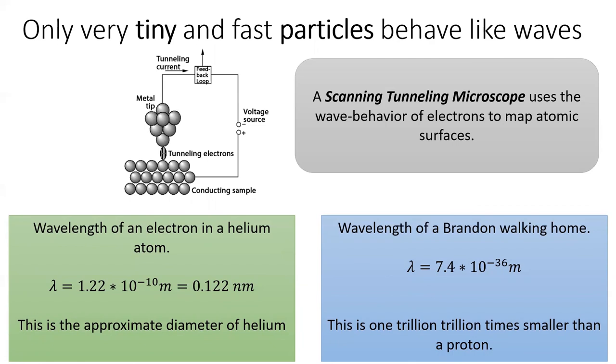The takeaway message here is that only very tiny and very fast particles have any detectable wave-like properties. This is exploited in many physics experiments, such as using a scanning tunneling microscope or a scanning electron microscope as well. And we'll see in the next section how electrons behave like waves in the all-important orbitals.